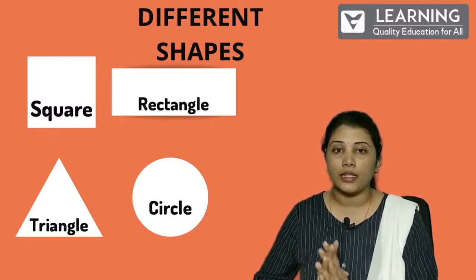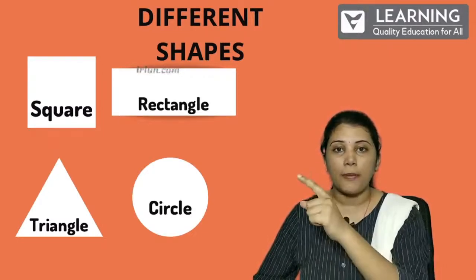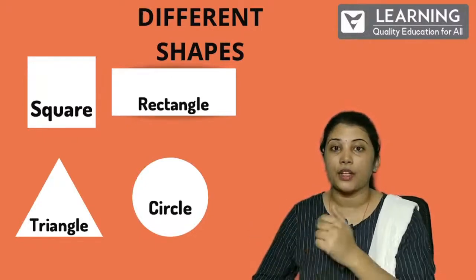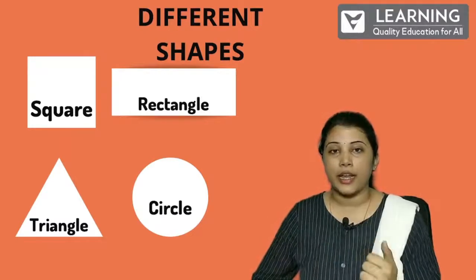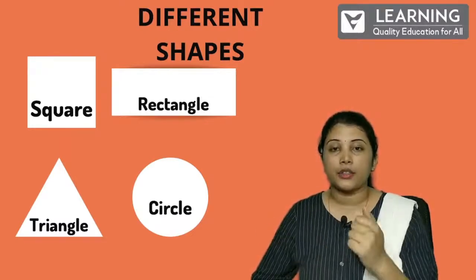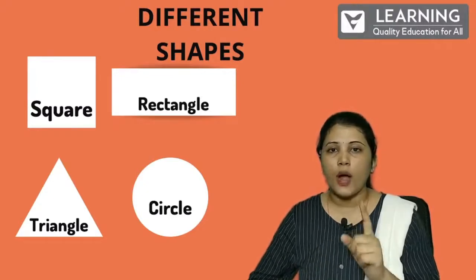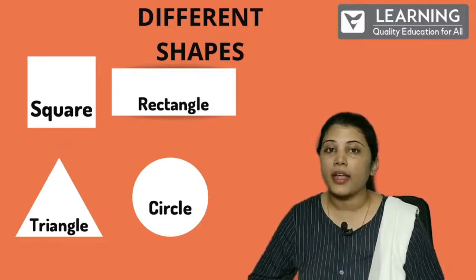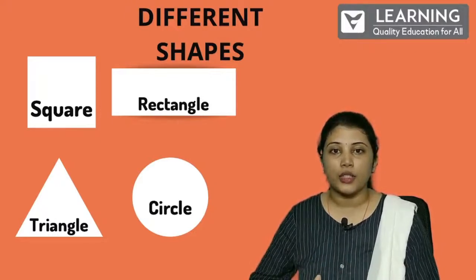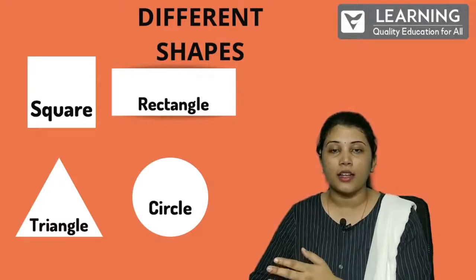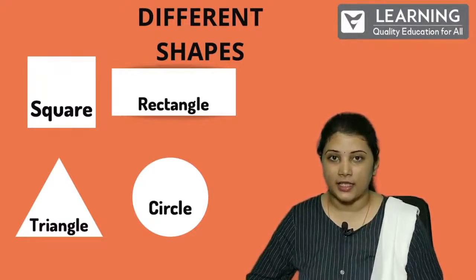Square — all four sides are equal. Rectangle — opposite sides are equal: top and bottom are equal, left and right are equal. Triangle — three sides joined together; one line is missing, making it a triangle. Circle — circle has no edges; it's round. Whereas triangle is having three edges, or you can say three corners.